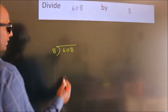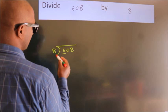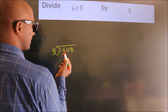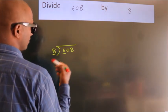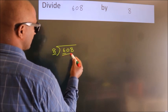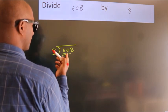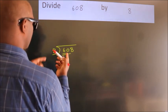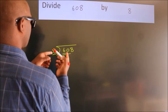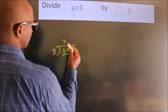Next. Here we have 6. Here 8. 6 is smaller than 8. So we should take two numbers. 60. A number close to 60 in the 8 table is 8 times 7 is 56.